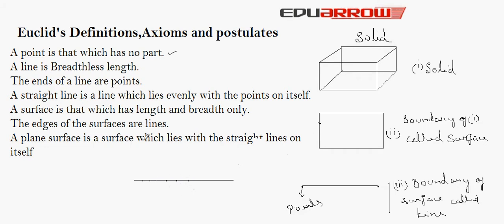The next definition is: a surface is that which has length and breadth only. This is the surface — it has length and breadth. So, a surface has length and breadth only. Next, the edges of surfaces are lines. We can conclude this from definition three.